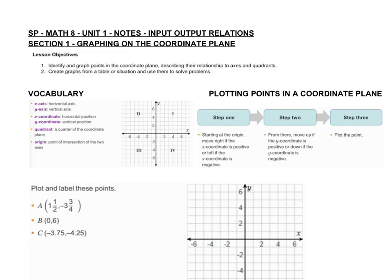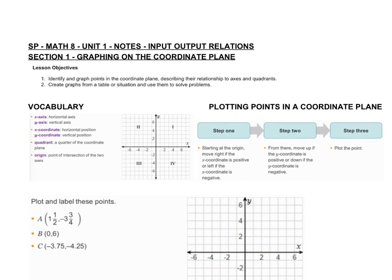Hello and welcome to Snowy Peaks Math 8. This is going to be the first video for the course. This first unit is called Input and Output Relations. In section 1, we're going to graph on the coordinate plane — identify and graph points, describe their relationship to axes and quadrants, and create graphs from a table or situation to solve problems.